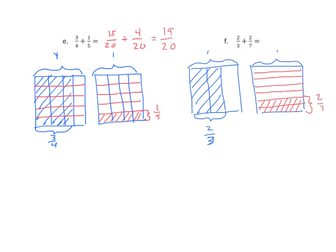Now to find the equivalent fractions. For the first addend, we're going to partition it using six horizontal lines to make seven equal parts. Three times seven is twenty-one, so our denominator will be twenty-one — the same for the second addend as well. Counting the shaded parts: fourteen are shaded. So we can write fourteen over twenty-one. We could also use multiplication: three times seven is twenty-one and two times seven is fourteen — that's essentially what we're doing here.